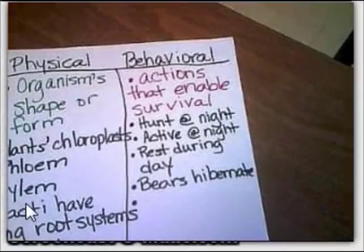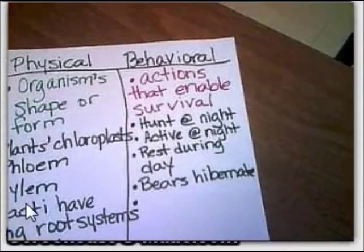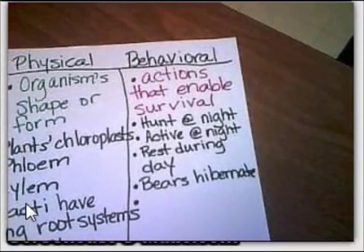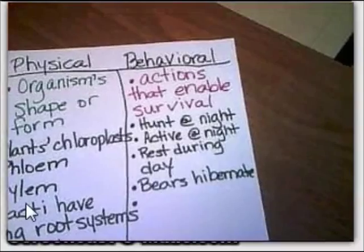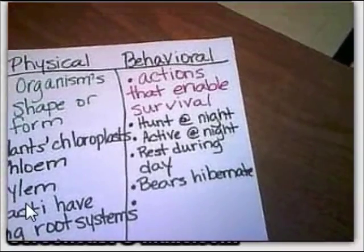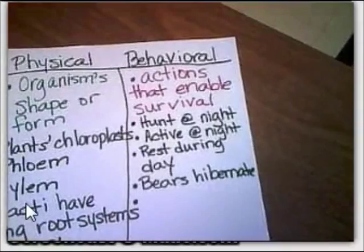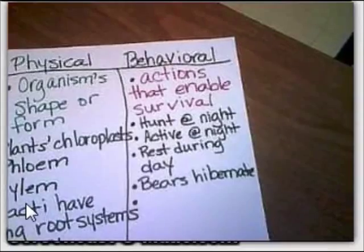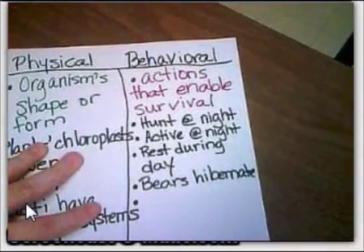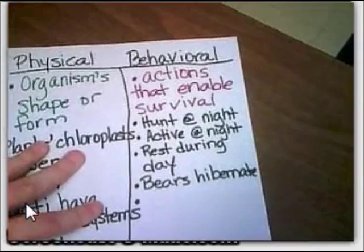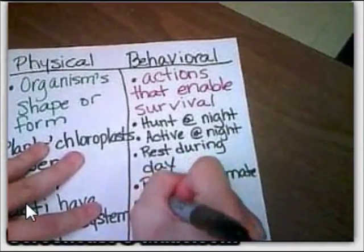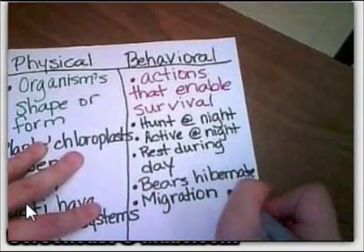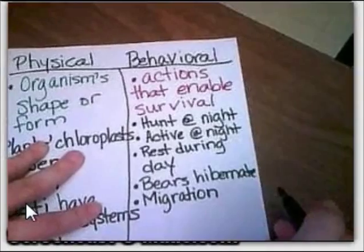Some animals travel to different places — not for vacations like you and I, but to avoid extreme temperature changes or to access food. What is that behavior called? When they migrate to another area? Migration. Some animals change their behavior but stay in their environment, and some just move — they're out of here.